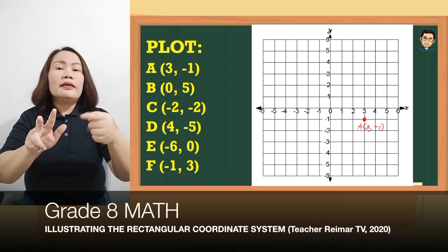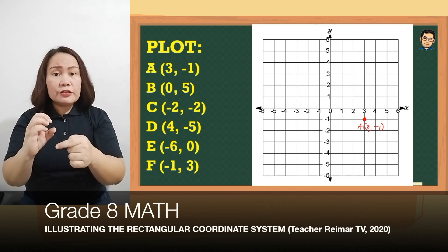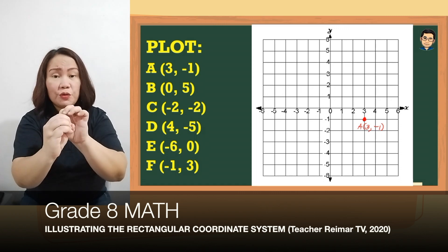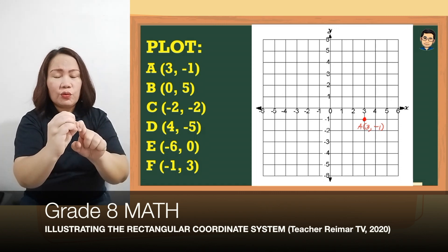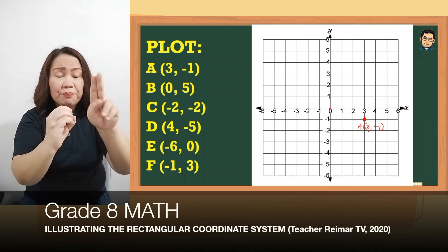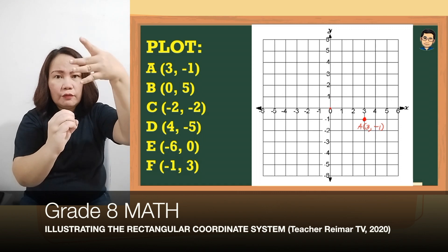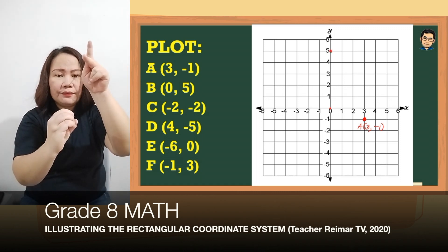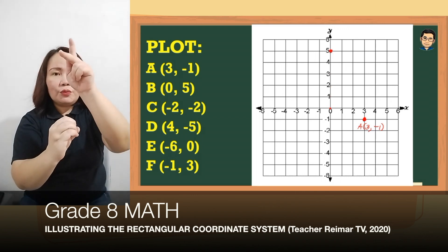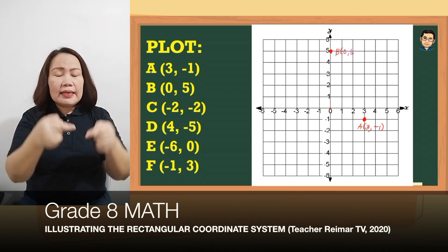Next, (0, 5). Kung mapapansin nyo, yung isa sa mga coordinates ng ordered pair natin is 0, ibig sabihin nasa coordinate axis yan. So mag-start tayo sa 0, sa gitna, and then we move 5 steps upward. So nandito po yung (0, 5) — nasa y-axis. So i-name natin siya as B (0, 5).